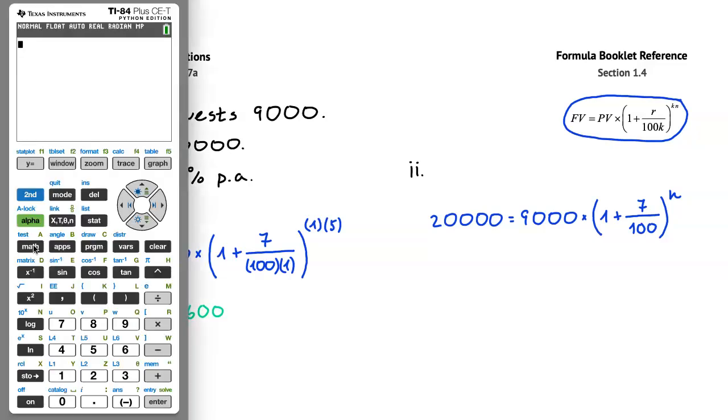To do so, I will press math, and to get to the solver, I will press the up arrow once. Then I will press enter to choose the solver. We'll enter the left-hand side, so 20,000, into the first box, and into the second box we'll enter the right-hand side, so 9,000 times, open parentheses, 1 plus 7 over 100. And to do this, I will press alpha, y, and enter, to put in a fraction. The numerator is 7, and the denominator is 100.